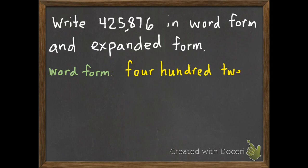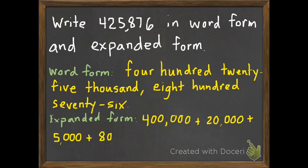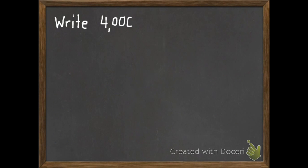Here's word form. You should have 425,876. Everything should be in words. If you have even one digit in there, go ahead and fix it real quick. That's the word form, but it says, and expanded form. Here's expanded: 400,000 plus 20,000 plus 5,000 plus 800 plus 70 plus 6.